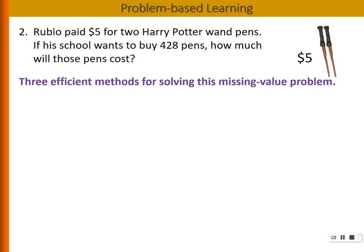There are three efficient methods for solving this missing value problem. A missing value problem is one where three of the four values are given and you're asked to find the fourth. Let's begin with the scaling method.